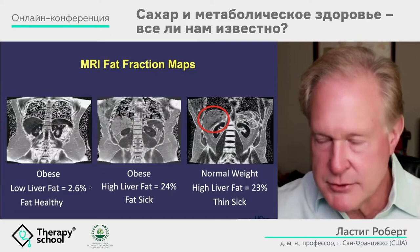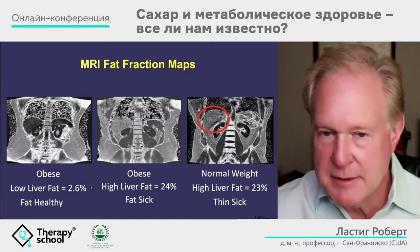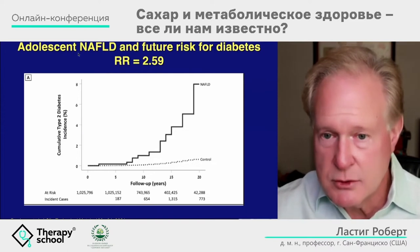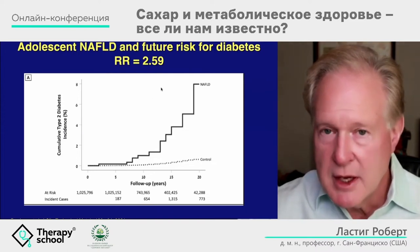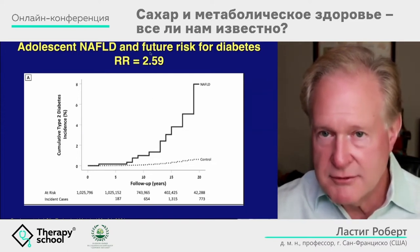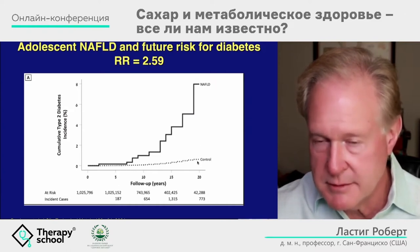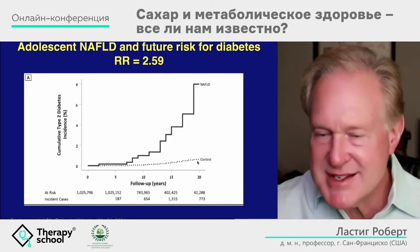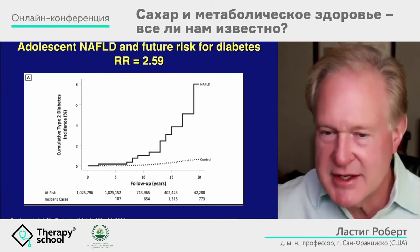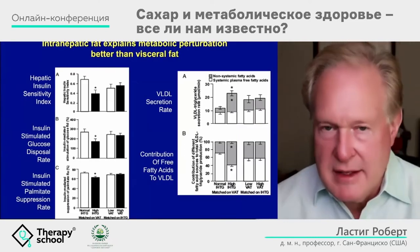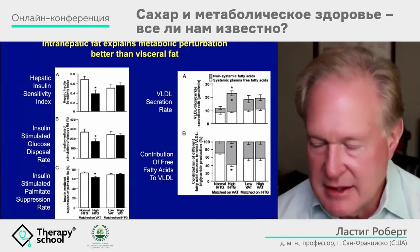It is not the fat you can see — it is the ectopic fat, and in particular the liver fat, that matters. For adolescents, a new paper showed a relative risk for diabetes of 2.6 if you had fatty liver disease compared to those who did not. Fatty liver disease is the sentinel disease that drives all the others. The question is: why? Where does the fat come from?